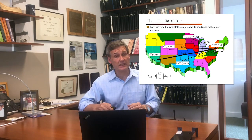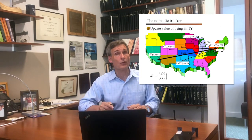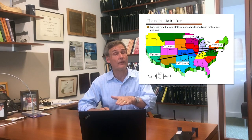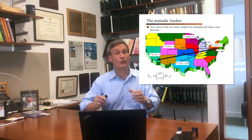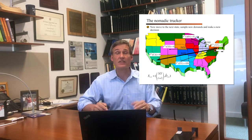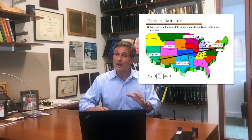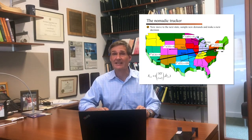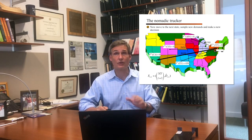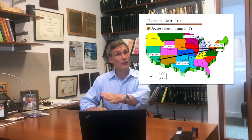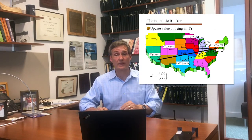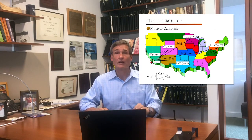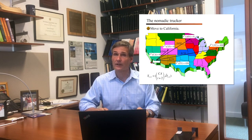Now, to go back to Texas I would add $125 to $450 to get $575, but there's a load going to California making $600, so I'm going to take that one. The value of New York is set to $600, and we go to California.